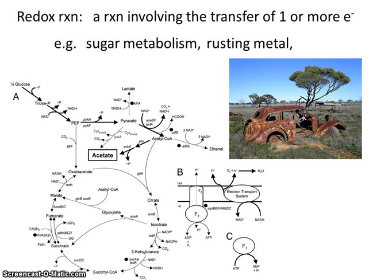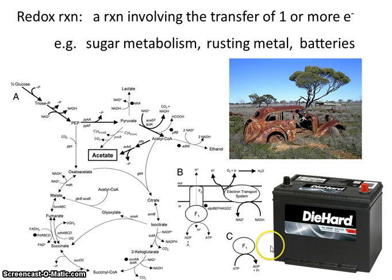Rusting of metal, so this would be like the oxidation of iron. Or even car batteries. Car batteries are a great example of electrochemical reactions.